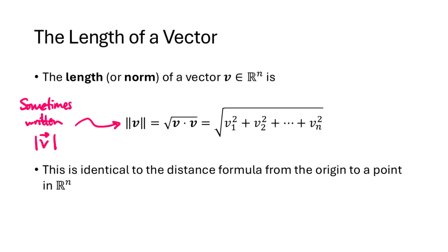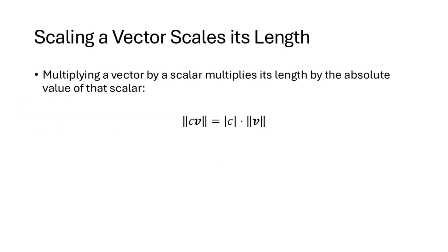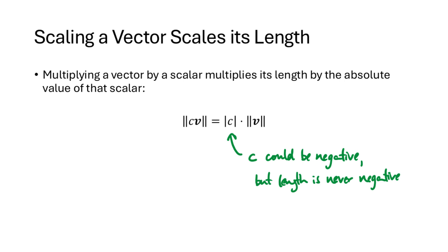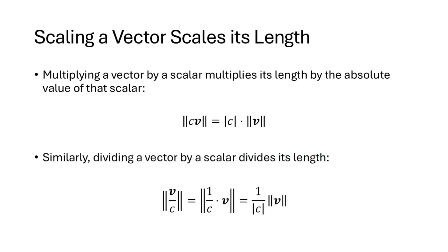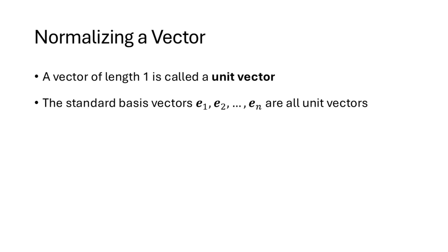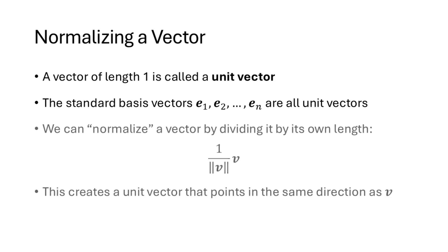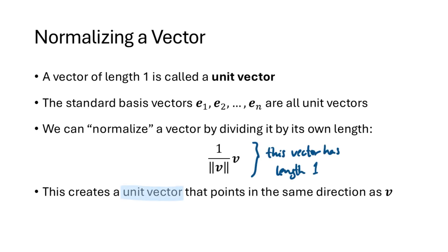This formula for length is the same as the distance formula from the origin to a point in Rn. If we multiply a vector by a scalar, that multiplies its length by the absolute value of that scalar — so the norm of c times v is the absolute value of c times the norm of v. A vector of length 1 is called a unit vector; the standard basis vectors e1 through en are all unit vectors. To normalize a vector, we multiply it by 1 over its norm, giving a unit vector pointing in the same direction as v.